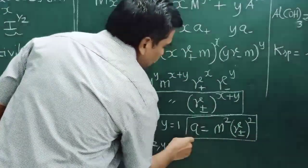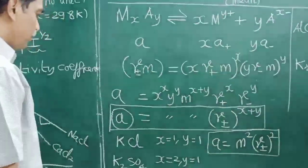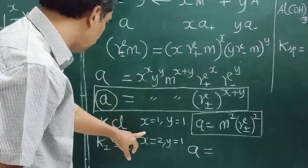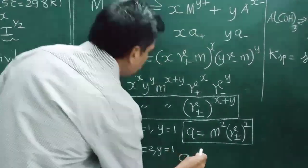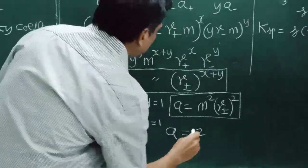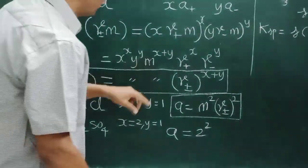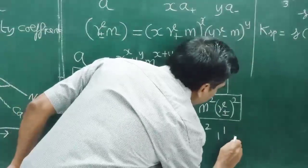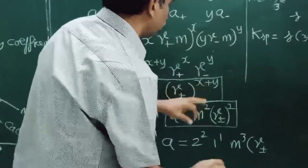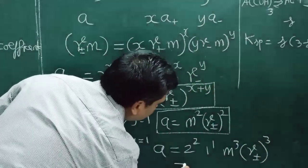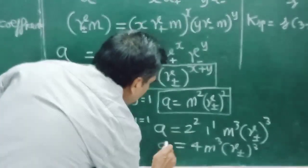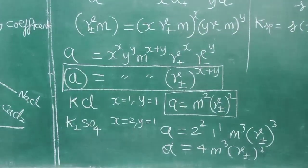Similarly, for K₂SO₄, x = 2 giving 2 K⁺ ions, so x = 2 and y = 1. Substituting: 2² × 1¹ = 4, m^(2+1) = m³, and gamma±^3. Therefore the activity of K₂SO₄ equals 4m³ × gamma±³. The mean activity coefficient gamma± can be obtained from the Debye-Hückel graph.